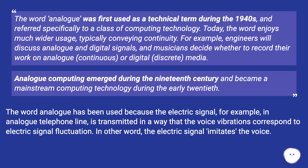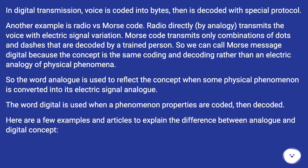The word analog has been used because the electric signal — for example, in an analog telephone line — is transmitted in a way that the voice vibrations correspond to electric signal fluctuation. In other words, the electric signal imitates the voice. In digital transmission, voice is coded into bytes, then decoded with a special protocol.